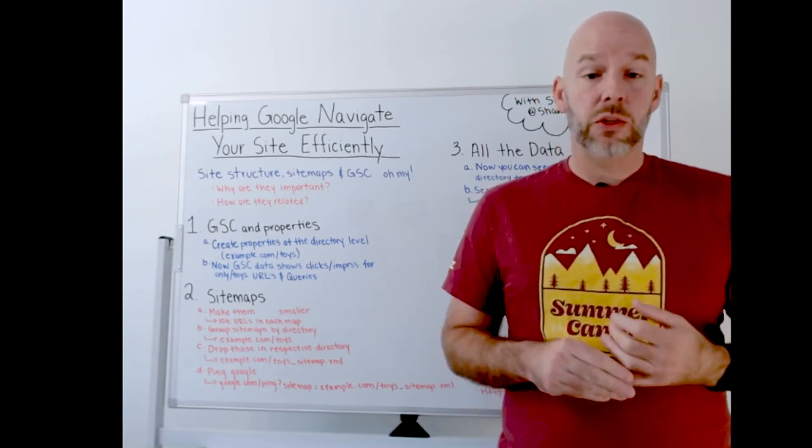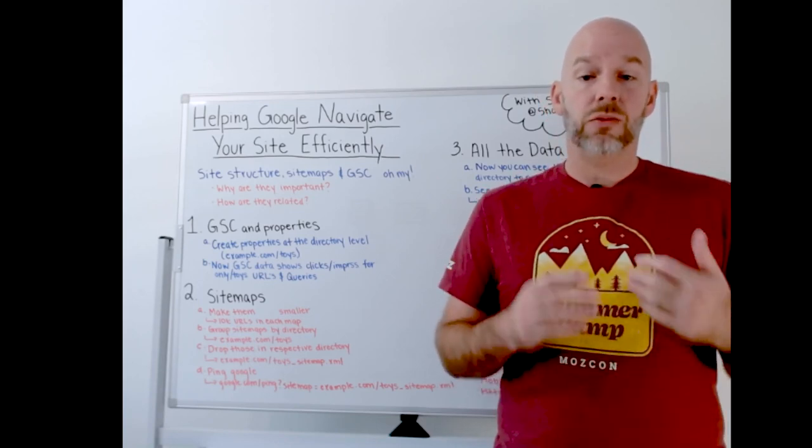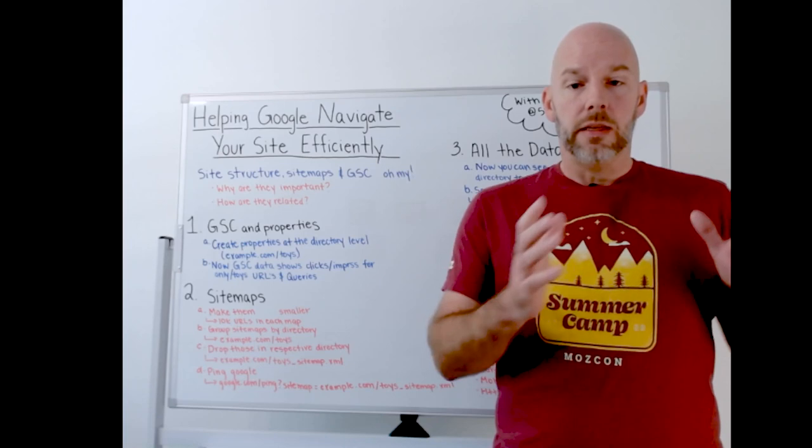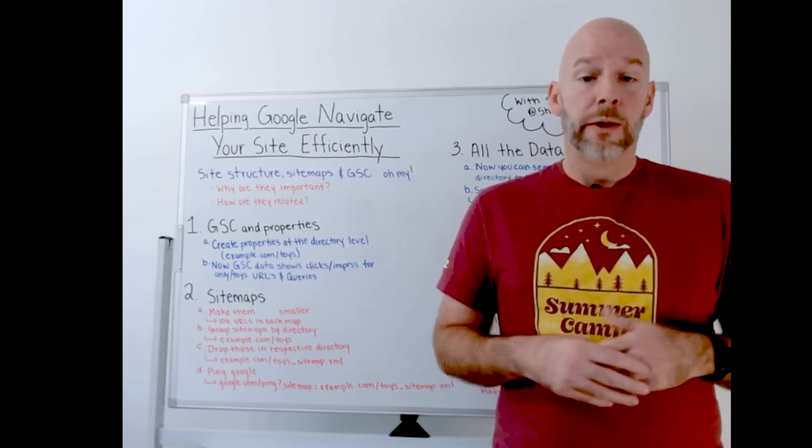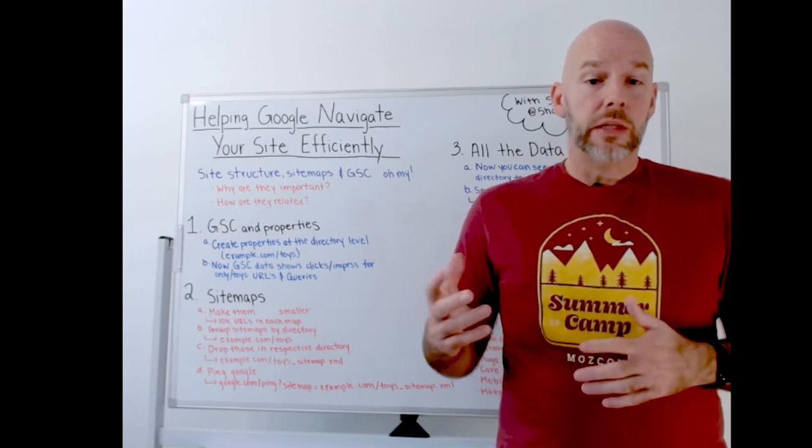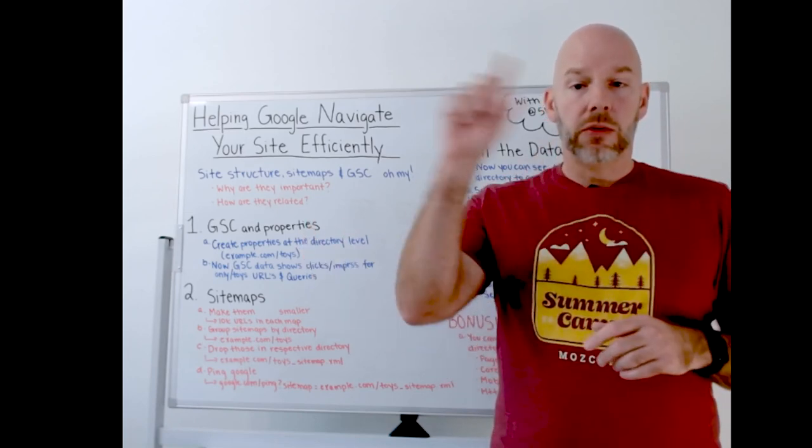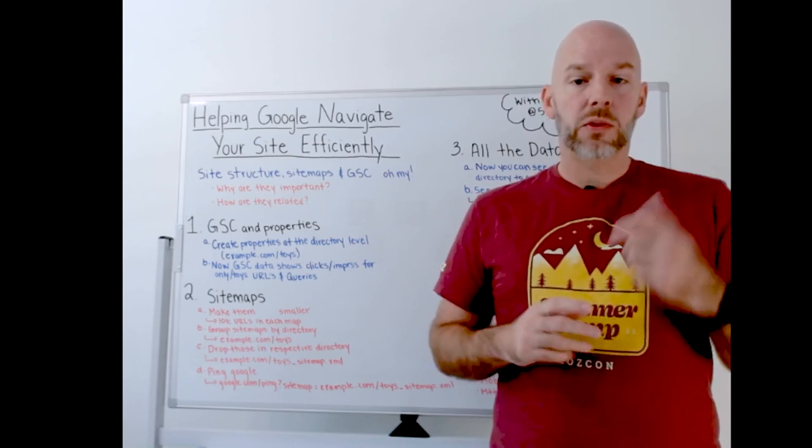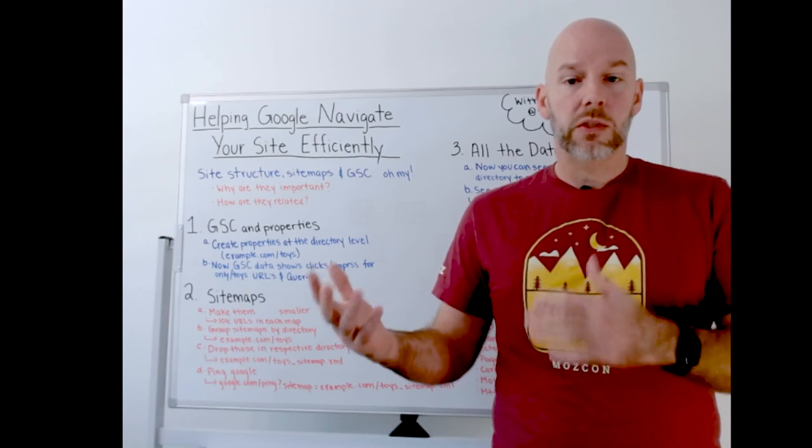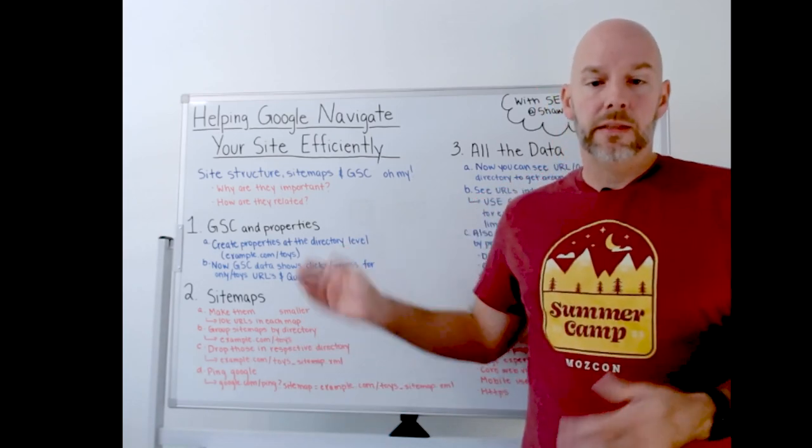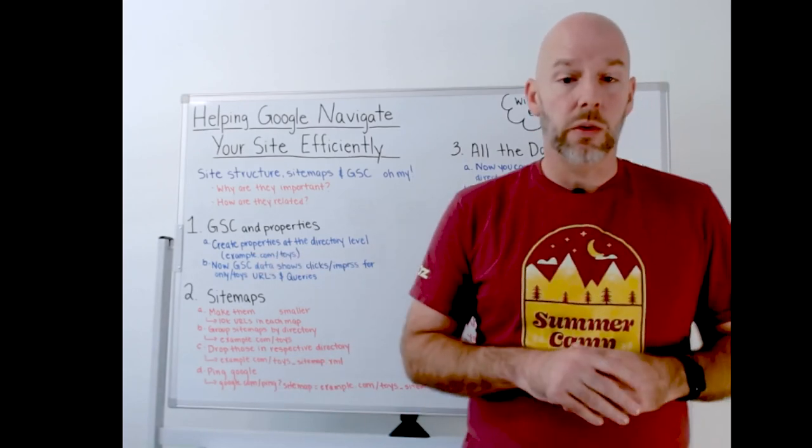So something I've actually been doing for the last decade or so is creating properties at a directory level to get that same amount of information, but to a specific directory. And some good stuff that I've been able to do with that is connect to Looker Studio and be able to create great graphs and reports, filters of those directories. To me, it's a lot easier to do it that way. Of course, you could probably do it with just a single property, but this just gets us more information at a directory level, like example.com slash toys.